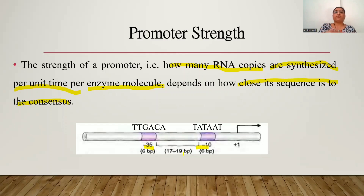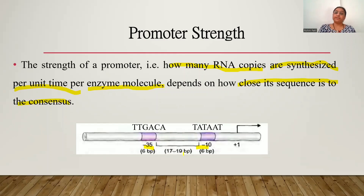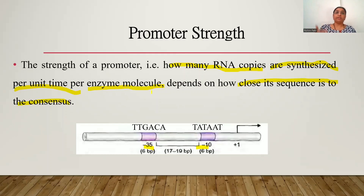RNA polymerase will search for these sequences and get loaded over them. If these consensus sequences are present, there will be efficient loading of RNA polymerase — the enzyme molecule — over the promoter, and efficient recognition and start of transcription. The transcription efficiency, that is RNA copies synthesized per unit time per enzyme molecule, will be at a higher level.